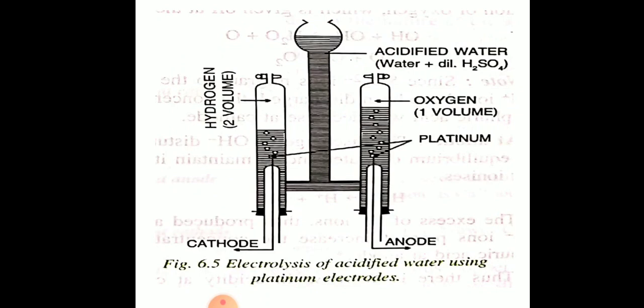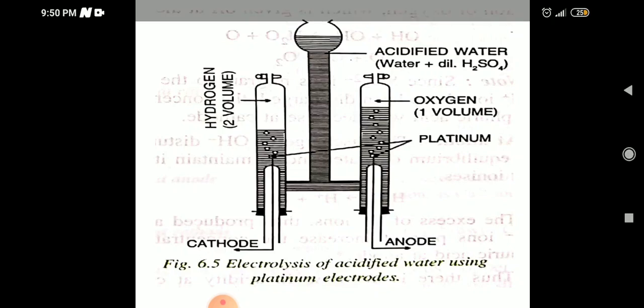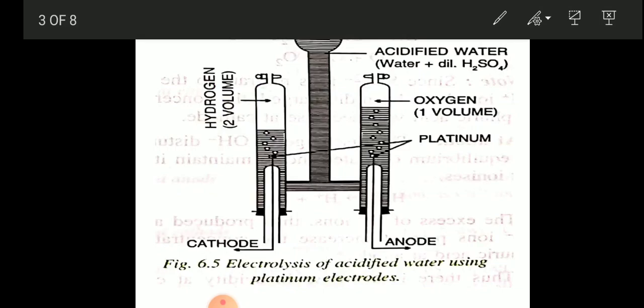Looking at the diagram for electrolysis of acidified water using platinum electrodes: on the left-hand side we have the cathode and on the right-hand side we have the anode. In the middle we have the apparatus containing acidified water — that is, water and dilute sulfuric acid — and this is connected to an electric cell through which we pass electric current.